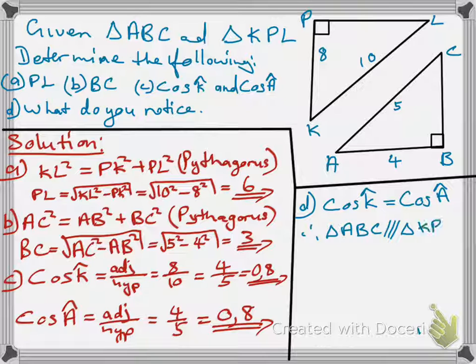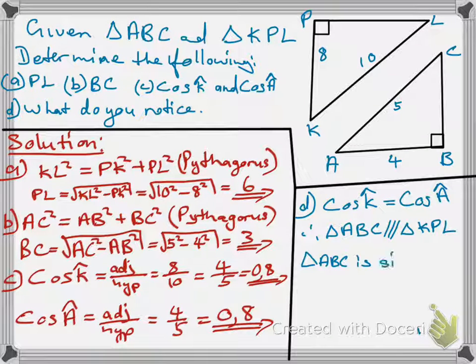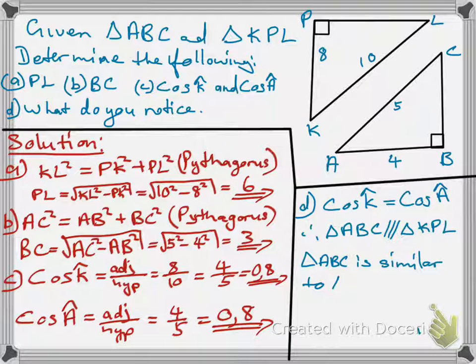So, what does that mean? What that means is that triangle ABC is similar to triangle KPL.